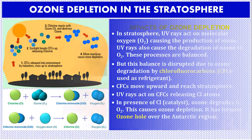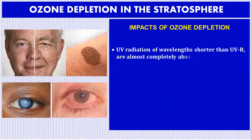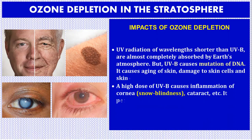The impacts of ozone depletion: UV radiation of wavelengths shorter than UVB are almost completely absorbed by Earth's atmosphere, but UVB causes mutation of DNA. It causes aging of skin, damage to skin cells and skin cancer. A high dose of UVB causes inflammation of the cornea known as snow blindness, cataract, etc., and permanently damages the cornea.